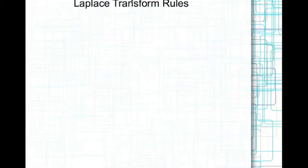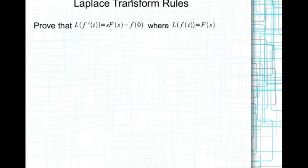Let's look at some Laplace transform rules. The first rule is the rule for the Laplace transform of the derivative of a function. If the Laplace transform of f of t is capital F of s, then the Laplace transform of f dash of t — that is the derivative with respect to time — is s times F of s minus f of 0.